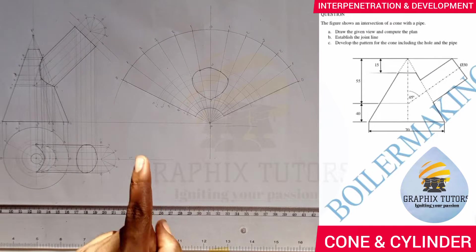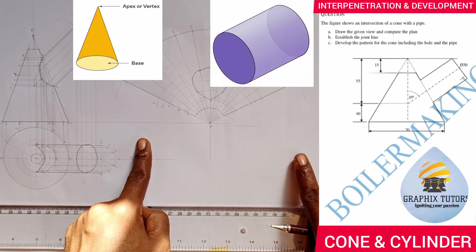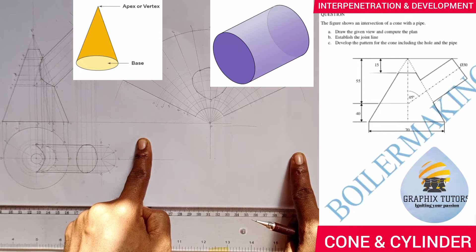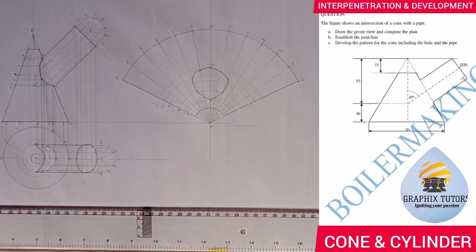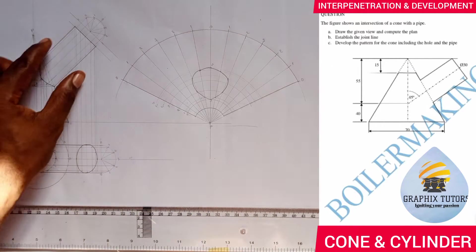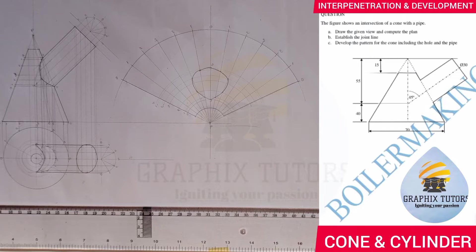This is what a cone looks like and this is what a cylinder looks like. Both of them are coming together — the cylinder is interpenetrating the cone in this manner, just like you can see on the right-hand side of the screen.